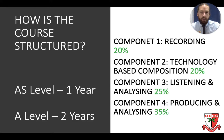They comprise of the same components, weighted the same. However, component 1 and 2, the coursework elements, are shorter on the AS level, and component 3 and 4, which are the written exams, are in more detailed depth and understanding at A-level than AS level.